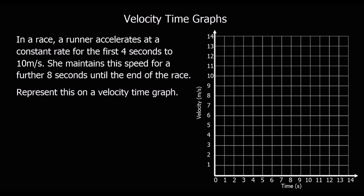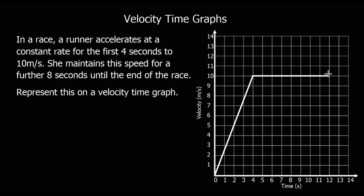The first thing we are going to do is draw a velocity-time graph. In a race, a runner accelerates at a constant rate for the first 4 seconds to 10 metres per second. We can assume they are starting from rest, so starting with no velocity and going from 0 up to 10 in 4 seconds. Then she is going to maintain this speed for a further 8 seconds, taking us to 12 seconds.